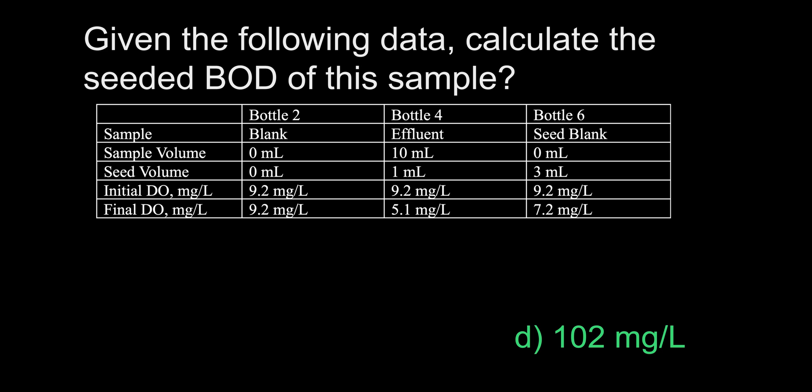This question may seem confusing and vague when you first read it, due to there being three samples listed on the chart. However, the middle column, Bottle 4 Effluent, is the only one containing a wastewater sample. The others list 0 ml for sample volume. Also, in a normal BOD test, there are multiple bottles of the same sample being tested, which is why the numbering is two, four, and six to show that there are multiple samples. For the sake of brevity, we are only shown three of them. Before I go on, if you are not familiar with BOD testing, please research it, as it is one of the most important wastewater concepts.